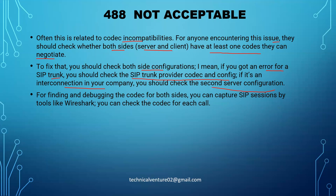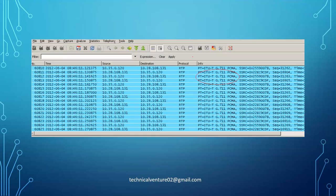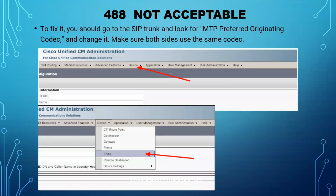For finding and debugging the codec for both sides, you can capture SIP sessions using tools like Wireshark. When making a call, open Wireshark traces and check what codec is actually being sent to the provider and what codec your server is using — you'll get all the details and can identify whether you're using the correct one. Here you can see it is showing G.711 PCMA, meaning it's trying G.711 A-law.